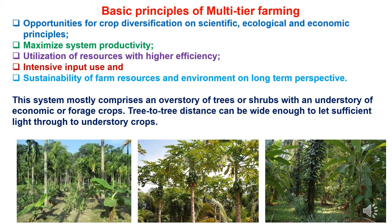This system mostly comprises an overstory of trees or shrubs which are tall in nature, and an understory of economic or forage crops which need shade. Tree-to-tree distance can be wide enough to let sufficient light through to the understory crops grown on the bottom lines, which prefer shade.